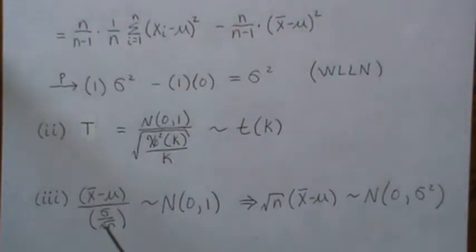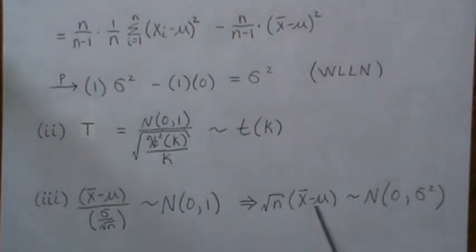You can rewrite this by inverting and multiplying the sigma squared, taking the square root of n to the other side and into that, and then you have to square it. So this quantity here is a normal random variable N(0, sigma squared).